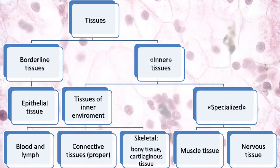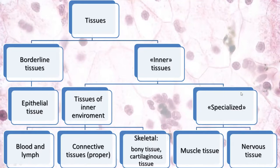We usually divide tissues into borderline tissues, with epithelial tissue separating inner and outer environments or two inner environments, and inner tissues. Inner tissues include tissues of inner environment — in the widest meaning, the connective tissues. They include blood and lymph, connective tissue proper, and skeletal tissues such as bone and cartilaginous tissue. Also, inner tissues include specialized tissues: muscle and nervous tissue. Today we will talk about borderline tissues, located between inner and outer environment, or between two inner environments, such as between blood and tissues.